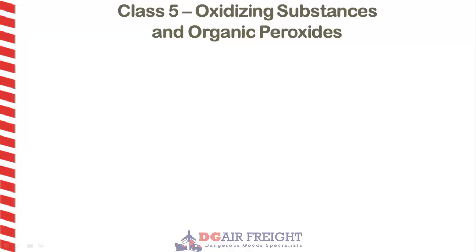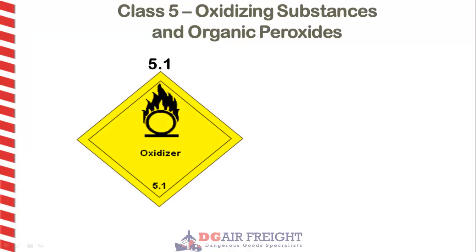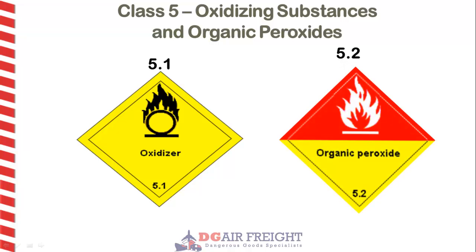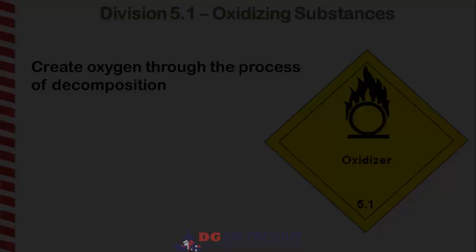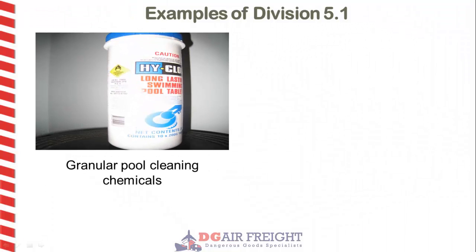Class 5 is made up of two divisions: oxidizing substances and organic peroxides. Division 5.1 contains substances that, although not combustible themselves, are able to give off oxygen when subjected to heat. This oxygen is then available to stimulate combustion of other substances. Examples of Division 5.1 include granular pool cleaning chemicals and ammonium nitrate fertilizer.